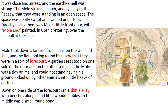It was close and airless, and the earthy smell was strong. The Mole struck a match, and by its light, the Rat saw that they were standing in open space, neatly swept and sanded underfoot. Directly facing them was Mole's little front door, with 'Mole's End' painted in Gothic lettering. Mole took down a lantern and lit it, and Rat saw they were in a sort of forecourt. The garden seat stood on one side of the door and on the other a roller.